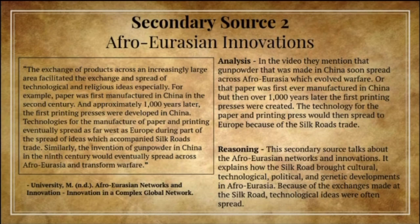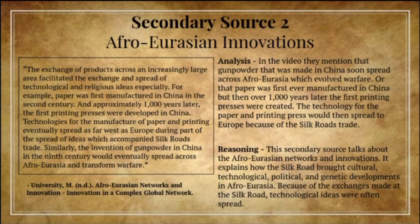Secondary Source 2: Afro-Eurasian Innovations. Analysis: In the video, they mention that gunpowder made in China soon spread across Afro-Eurasia, which evolved warfare. Also, paper was first manufactured in China, and over a thousand years later, the first printing presses were created. The technology for paper and the printing press would then spread to Europe because of Silk Road trade. Reasoning: This secondary source discusses Afro-Eurasian networks and innovations, explaining how the Silk Road brought cultural, technological, political, and genetic developments to Afro-Eurasia. Because of the exchanges made along the Silk Road, technological ideas were often spread.